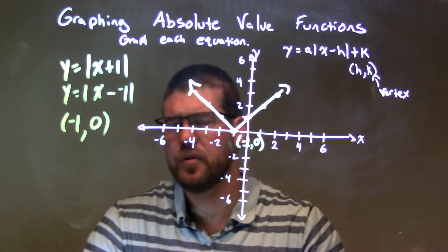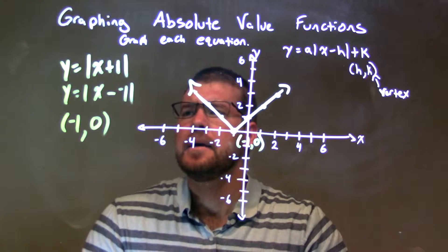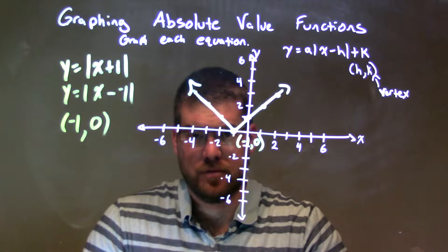Quick recap: we're given y equals the absolute value of x plus 1. We're going to find our vertex, h minus k.